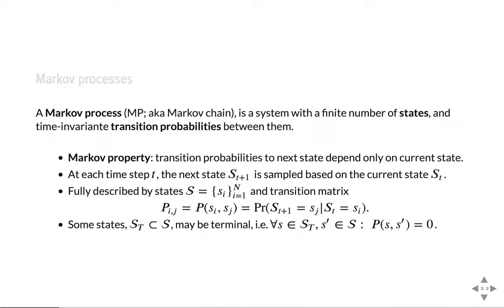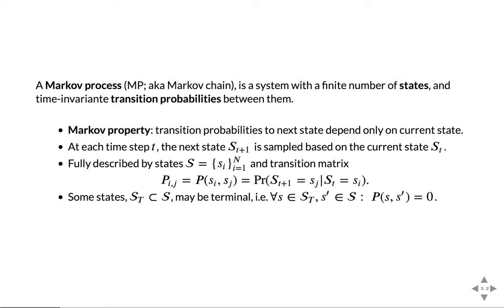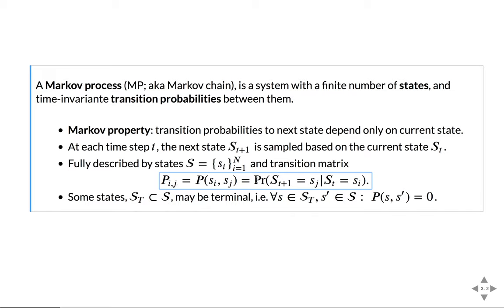Let's talk about Markov processes, which form basically the basis of the framework for RL. A Markov process, or Markov chain, is a system that has a finite number of states and transition probabilities between them that have to be time-invariant. The crucial property is that the probability to transition to the next state only depends on the current state — it doesn't matter how we got there. We have this transition matrix: the probability to go from state i to state j. Some states may be terminal, meaning for any other state you have no probability to get there from the terminal state.